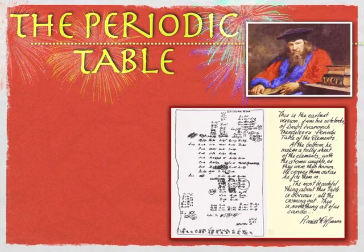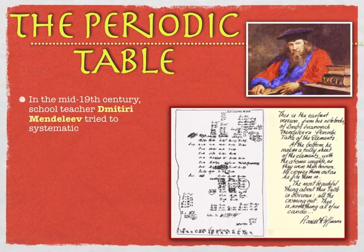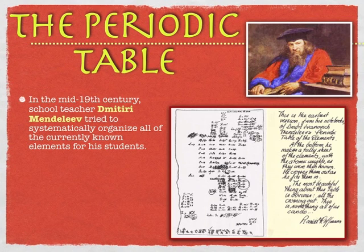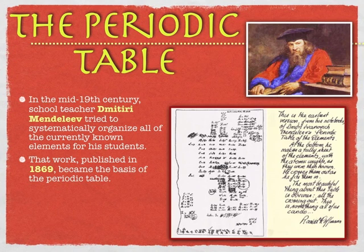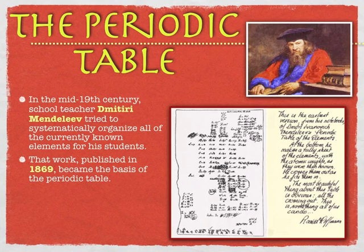The modern periodic table didn't always look that way. It was based on the work of Dmitry Mendeleev, back from the mid-19th century. He was a Russian school teacher who wanted to organize the elements for his students, and he came up with a pattern that eventually led to the periodic table we know today. Other people were trying to do this too, but Dmitry is given credit because he was able, through his periodic table, to predict the properties of elements not yet discovered.